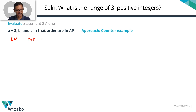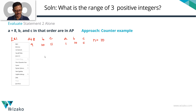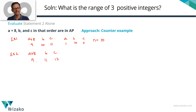Let's take A+8, B, and C to be 9, 10, and 11 — an AP with common difference 1. Then A = 1, B = 10, C = 11, and the range = 11 − 1 = 10. For a counter-example, let A+8 = 9 again, but B = 11 and C = 13 — an AP with common difference 2. Then A = 1, C = 13, and the range = 13 − 1 = 12. So we get different ranges: 10 and 12.